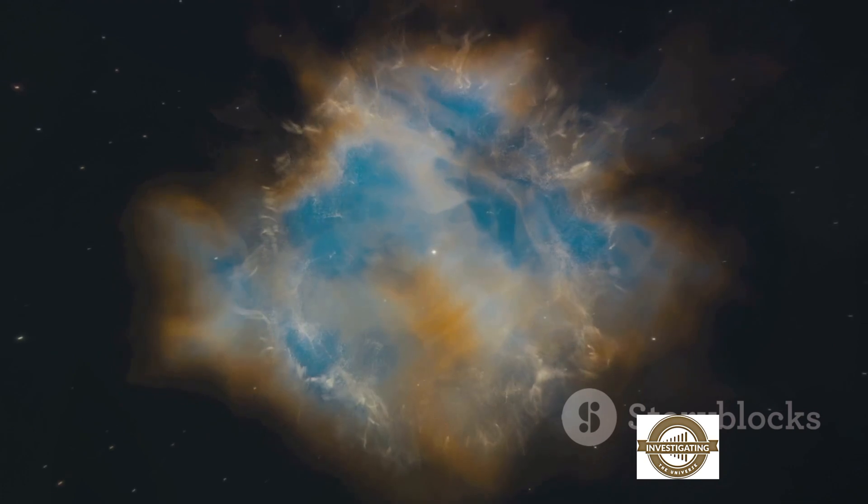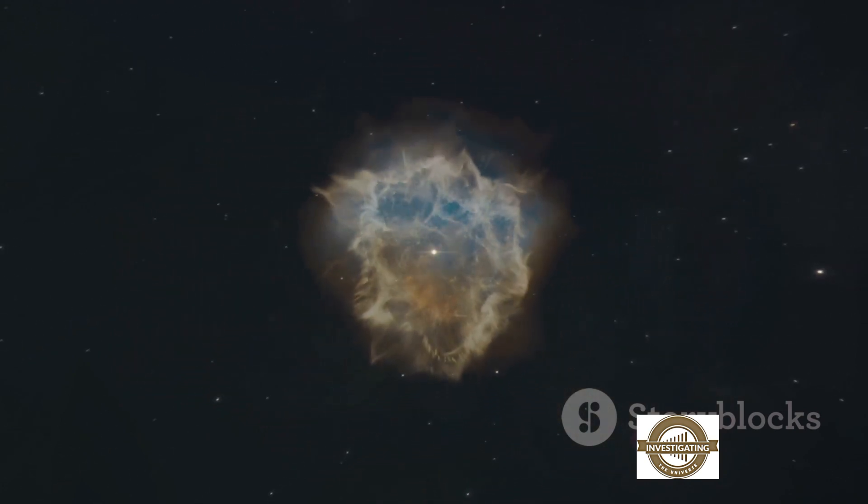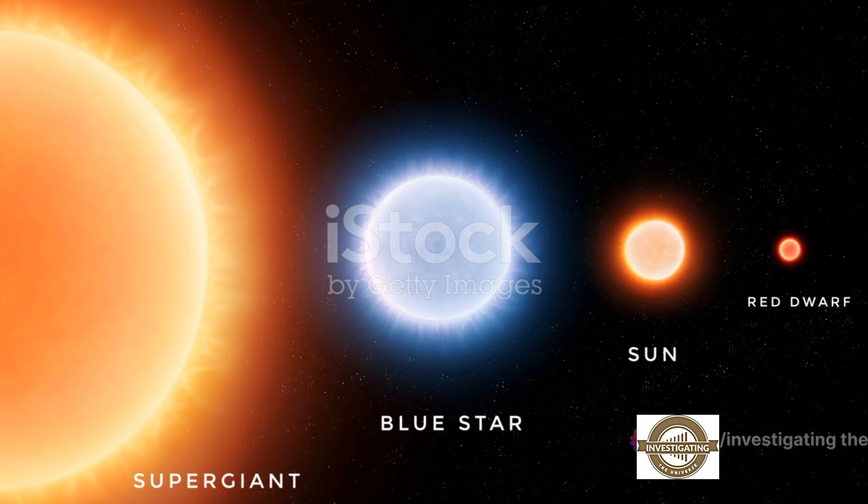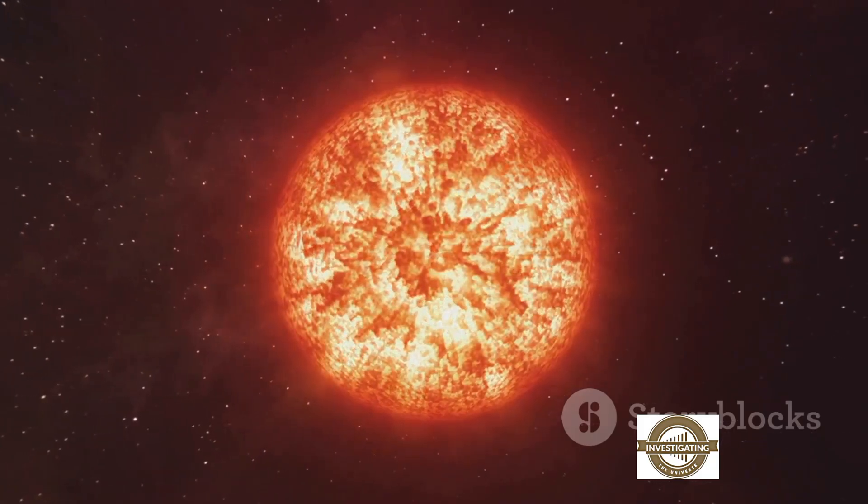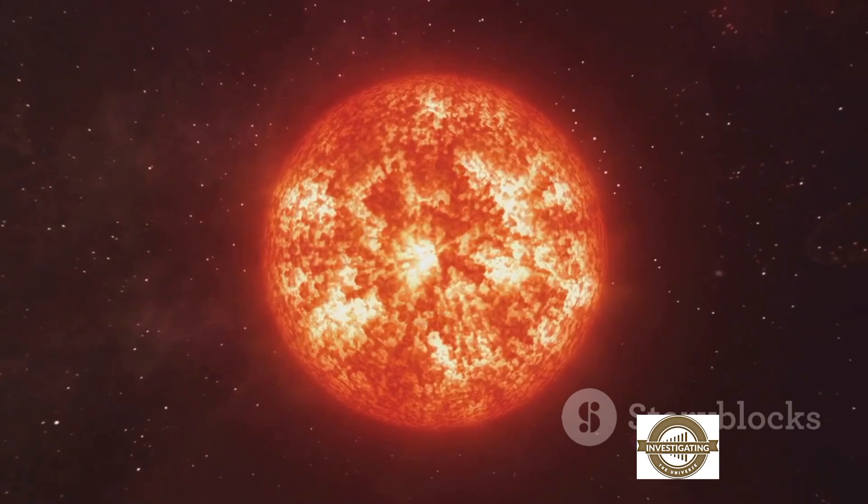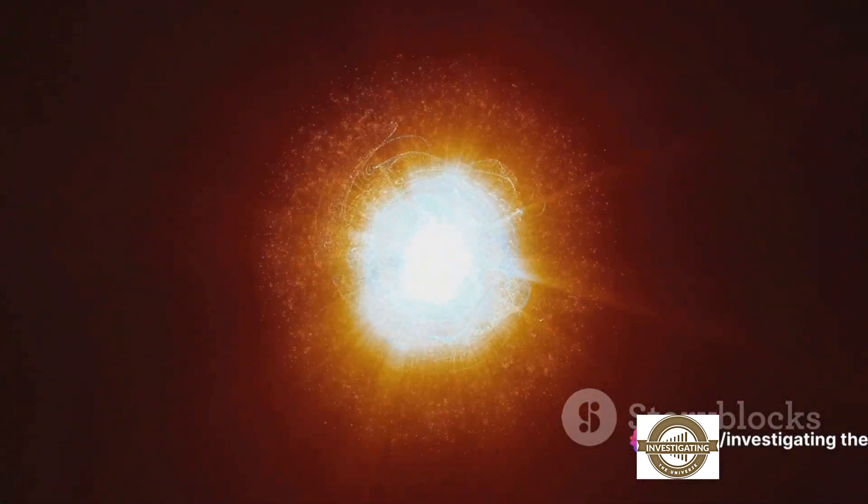Stars are born in nebulae, vast clouds of dust and gas. Over millions of years, gravity pulls this material together until the pressure and heat ignite nuclear fusion, and a star is born. The star spends most of its life in a phase called the main sequence, where it burns hydrogen to produce helium, releasing light and heat in the process. Our own sun is currently in this stable phase.